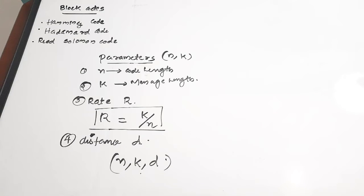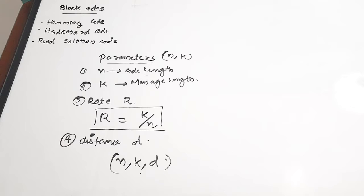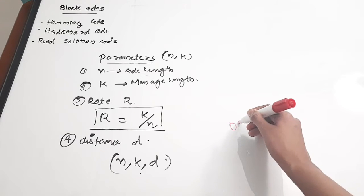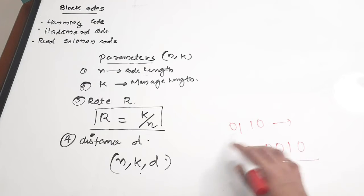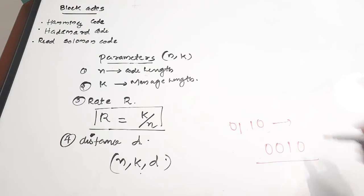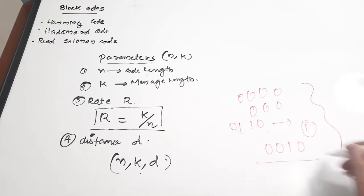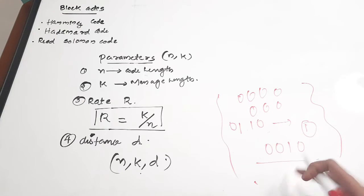Out of the code length n, only k is the valid message information. The rate of a block code is defined as the ratio between the message length and the block length, that is k divided by n. The distance d of a block code is the minimum number of positions in which code words differ. For example, consider two code words 00100 and 00110 — they differ in only one bit position, so the minimum distance is 1.